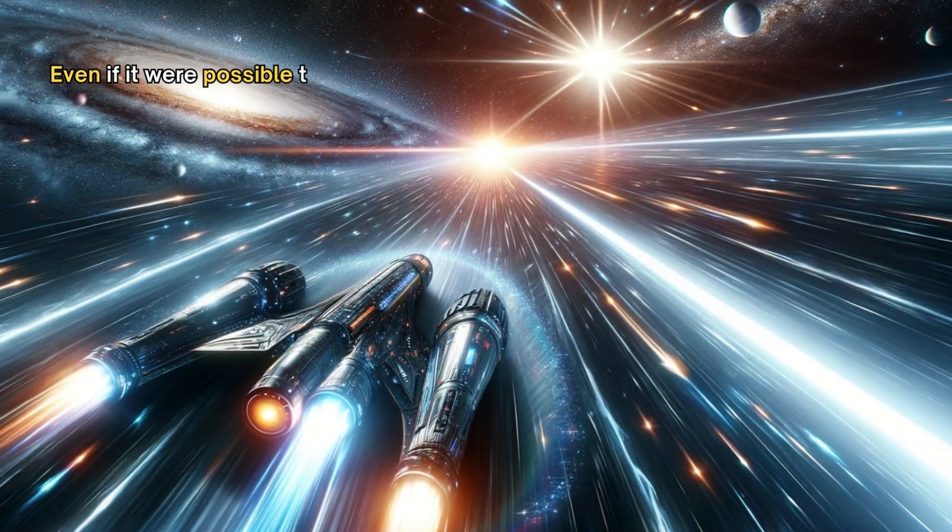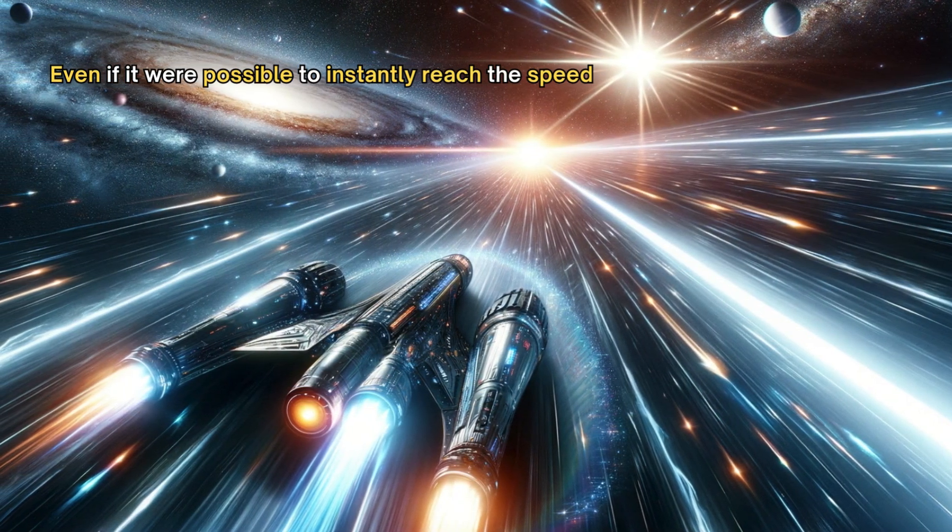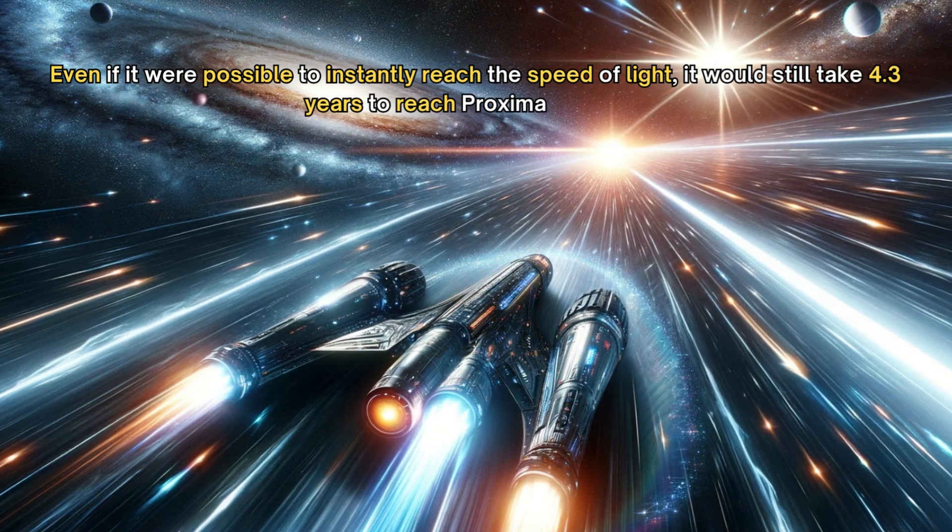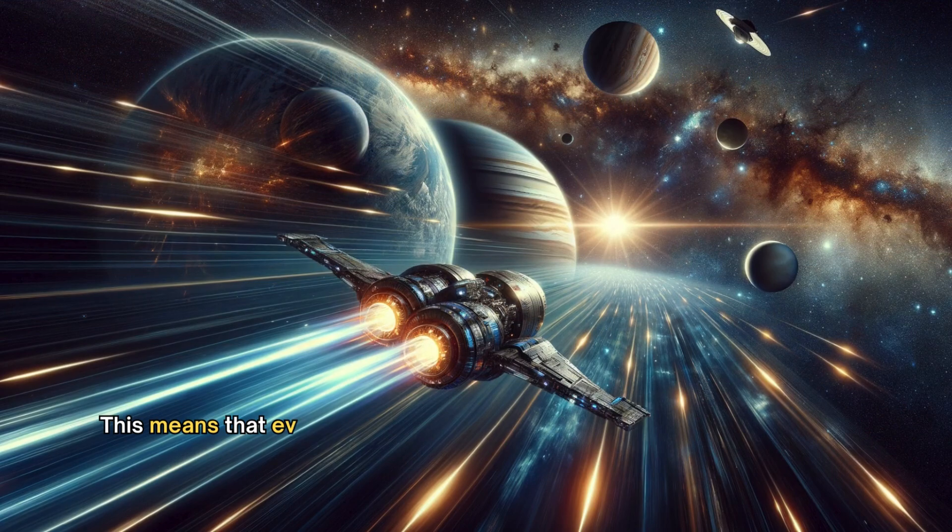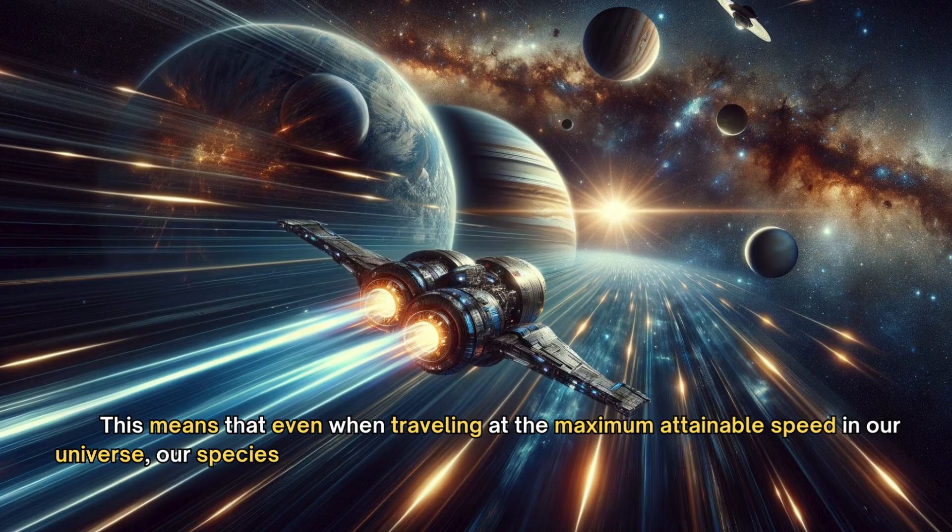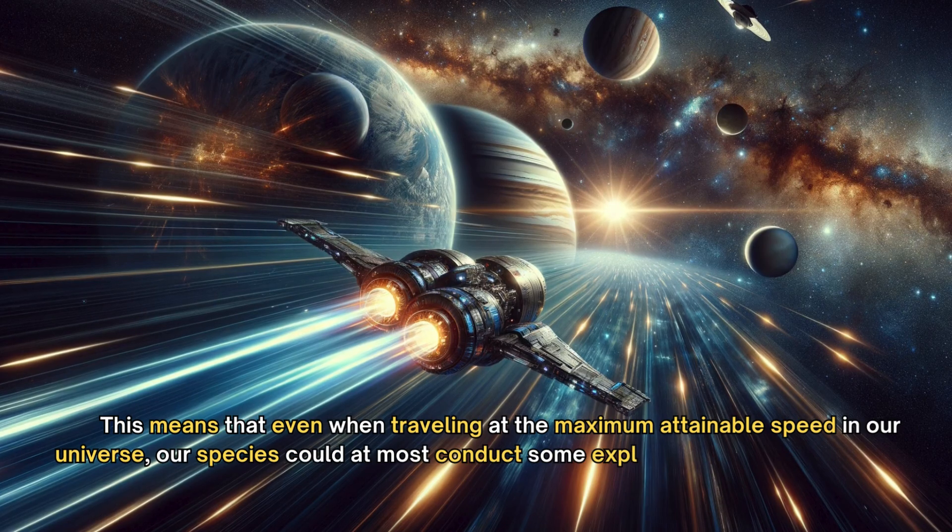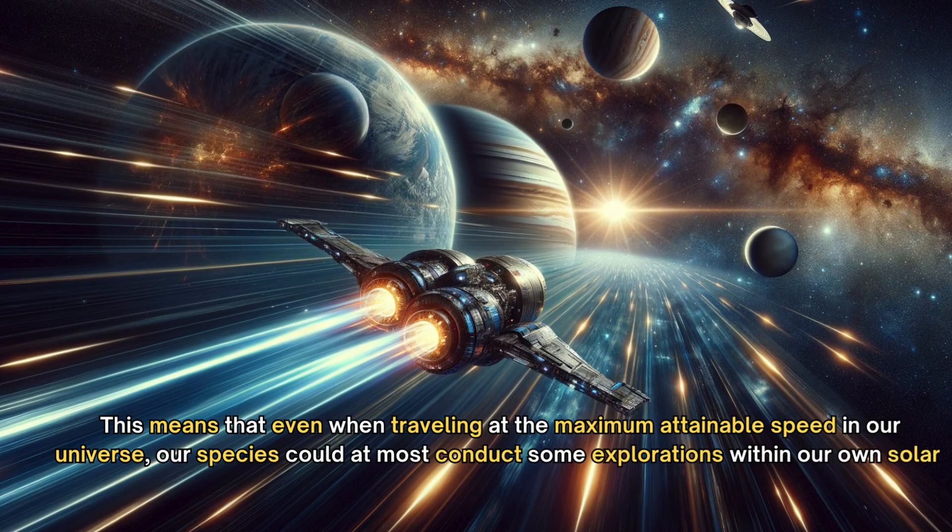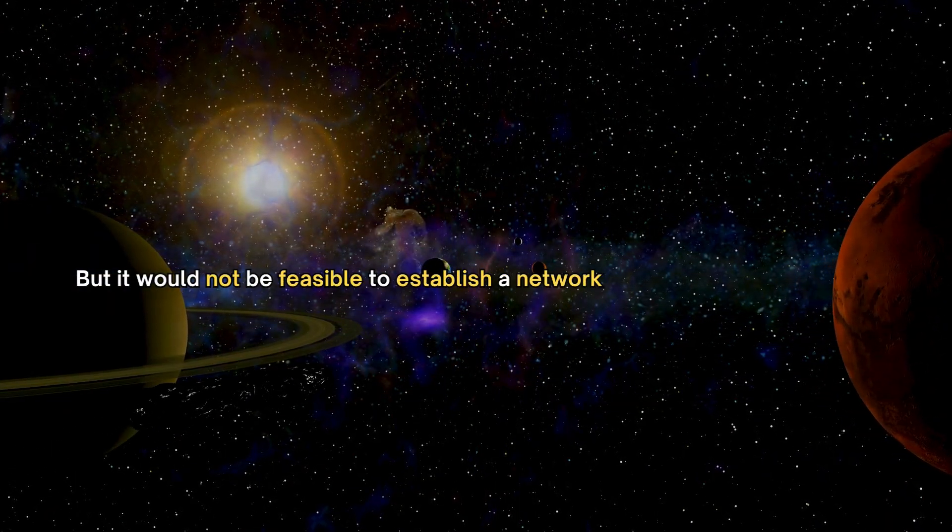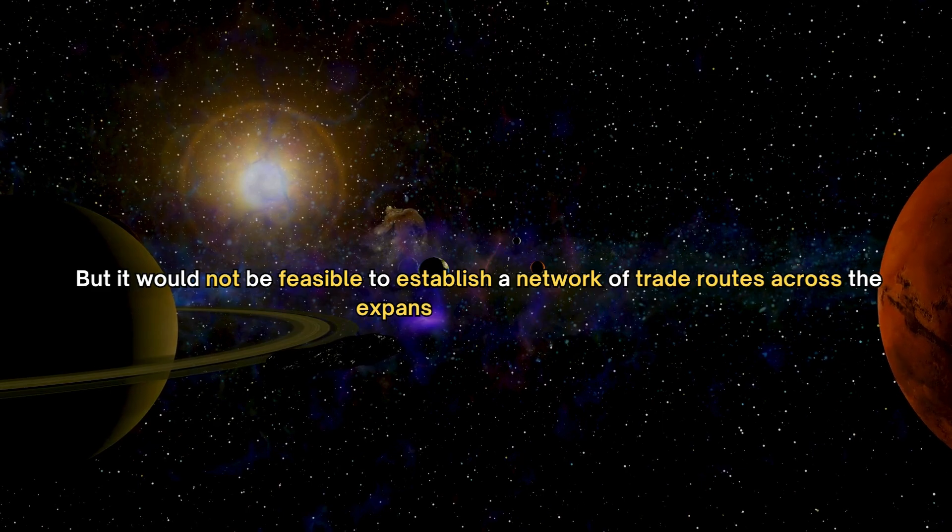Even if it were possible to instantly reach the speed of light, it would still take 4.3 years to reach Proxima Centauri. This means that even when traveling at the maximum attainable speed in our universe, our species could at most conduct some explorations within our own solar system, but it would not be feasible to establish a network of trade routes across the expanse of the galaxy.